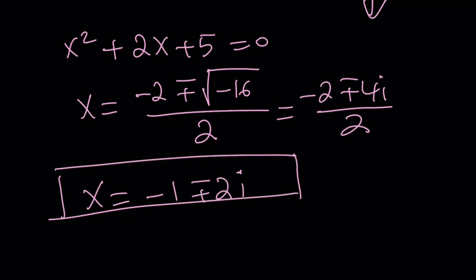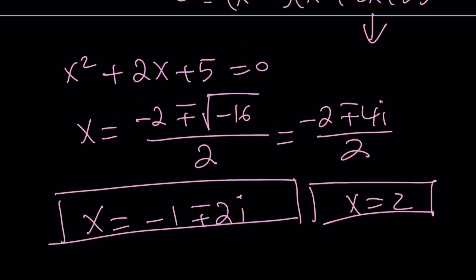And we can divide everything in the numerator by 2. And we get x equals negative 1 plus minus 2i. Along with x equals 2, that gives us three solutions. One of them being real non-complex.